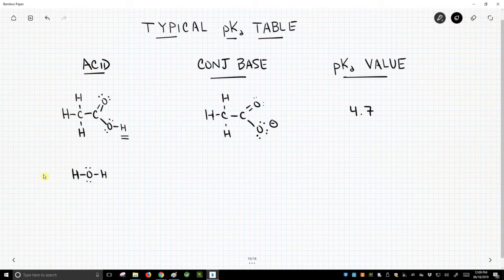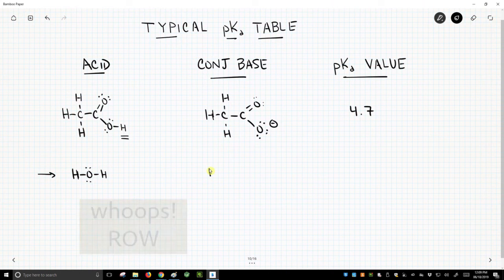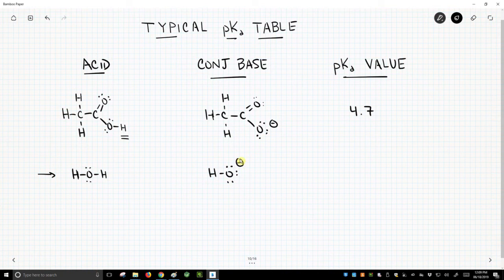Another example of an acid you will very commonly encounter is water. Here in our second column, when water loses a proton, we get hydroxide. And it turns out the pKa of water is about 15.7.